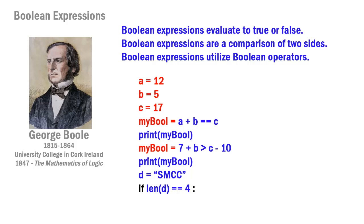Often we don't use hard-coded numbers; we use variables. For example: a = 12, b = 5, c = 17 — these might be inputted by the user. Then a variable my_bool = (a + b == c) will evaluate as true or false and assign that value. We can also use mathematical expressions combining numbers and variables, such as 7 + b > c - 10, which evaluates to 12 > 7, a true expression.